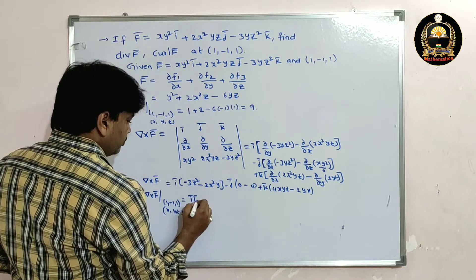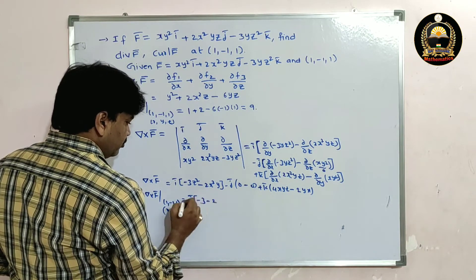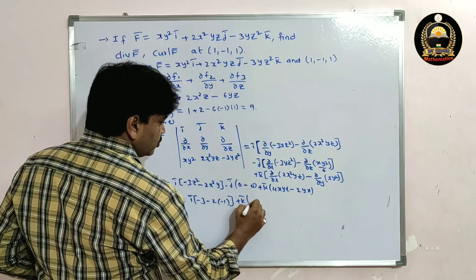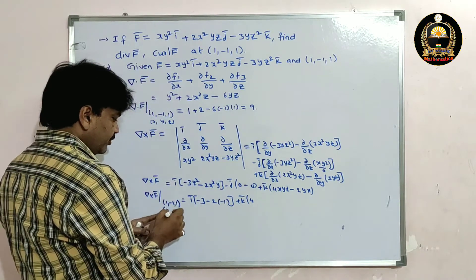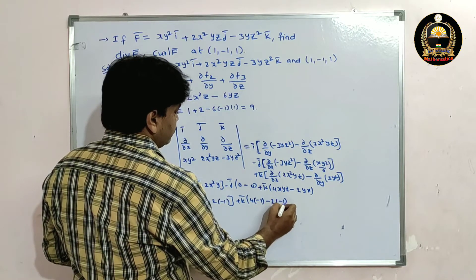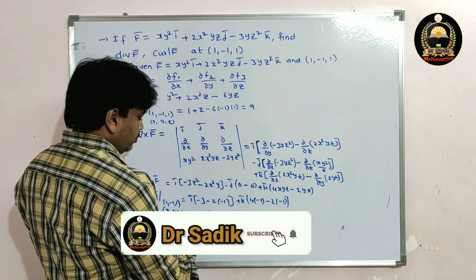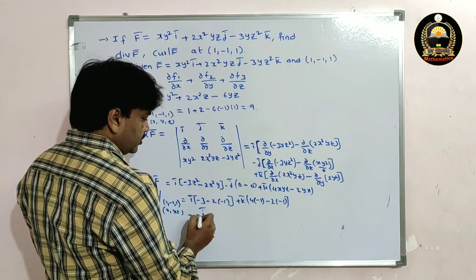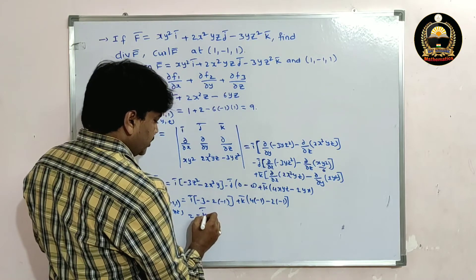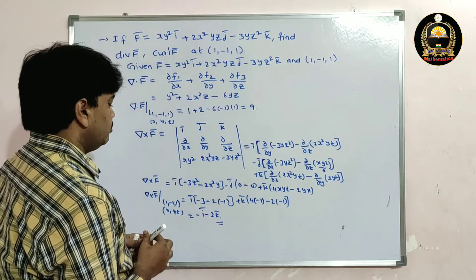ī component: -3(1)² - 2(1)²(-1) = -3 + 2 = -1, so we get -ī. j̄ coefficient is 0. k̄ component: 4(1)(-1)(1) - 2(1)(-1) = -4 + 2 = -2, so we get -2k̄. Therefore del cross f̄ at (1,-1,1) = -ī - 2k̄.